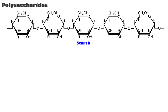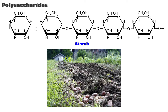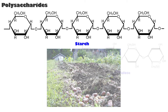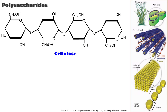Starch is the storage molecule synthesized from glucose by plants. Cellulose, which is also synthesized by plants for cell wall construction, is indigestible because we lack enzymes for it. Cellulose provides fiber to promote peristalsis.